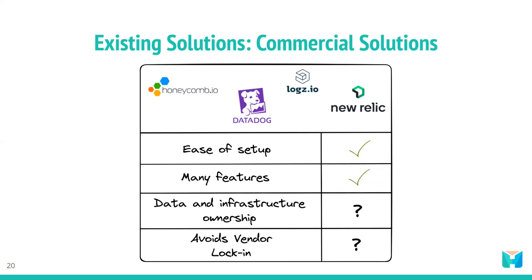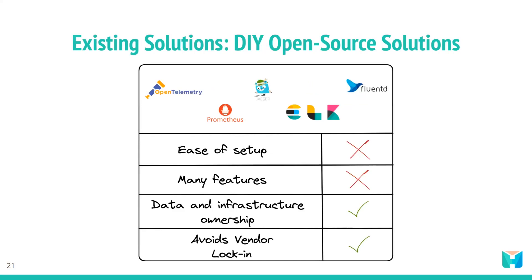Commercial solutions also come at a cost that may be too high for smaller companies. Additionally, certain commercial solutions may create vendor lock-in situations where a company becomes dependent on a particular solution's products and ecosystem. In addition to commercial observability solutions, various open source observability tools are available that can provide a cost-effective alternative. These tools offer various features for collecting, analyzing, and visualizing log, metric, and tracing data while also providing flexibility in terms of data ownership and infrastructure, and they don't lock organizations into a particular vendor.